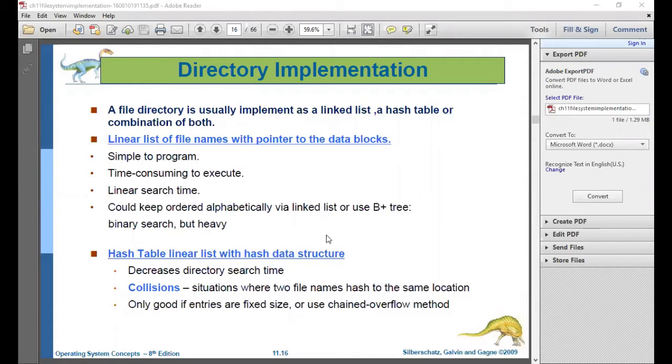Linear list of file, as the name indicates - linear list of file names which pointed to the data blocks. So as the list proceeds, every end of the data block has a pointer which points to the next block. It is simple to program, but time consuming to execute because the execution moves forward in a linear fashion and cannot randomly choose the blocks to execute. Linear search time also has a role here.